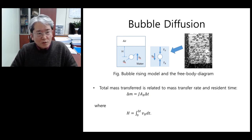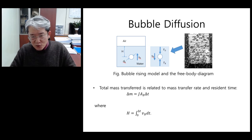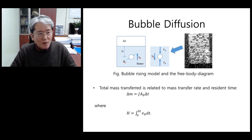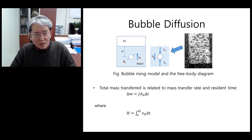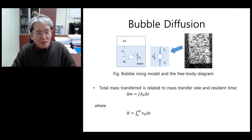The total diffused mass is related to the mass transfer rate and resident time as shown in the equation. Also, the resident time is dependent upon the depth of the bubbler and the rising velocity.